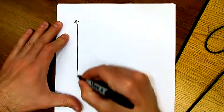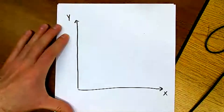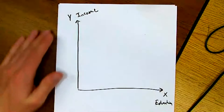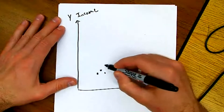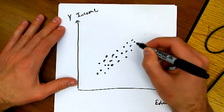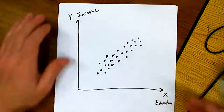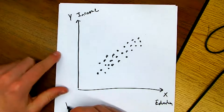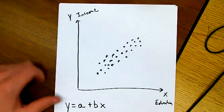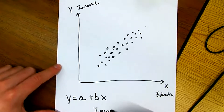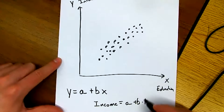Let's say we have some X and some Y variable. We'll call X 'years of education' and Y 'income.' If we looked at the data, there would be a bunch of different observations. For each observation we have an X and Y value — that person's years of education and that person's income — and we could plot every single observation using those X and Y coordinates, basically creating a scatter plot.